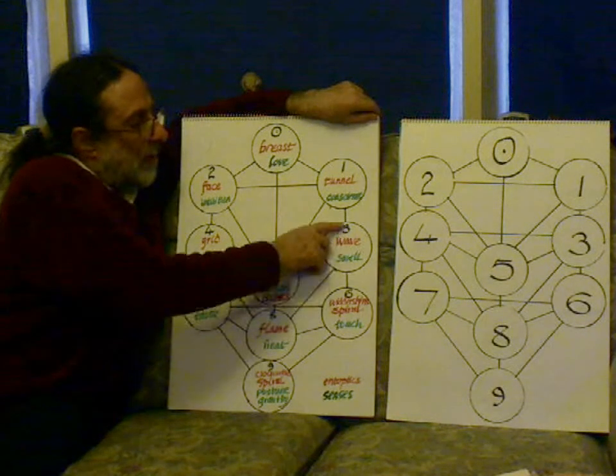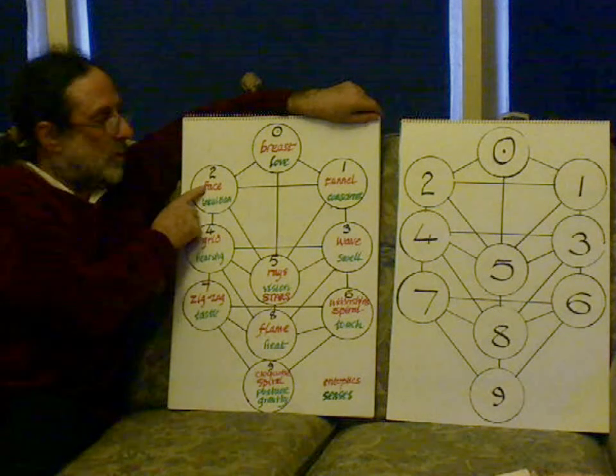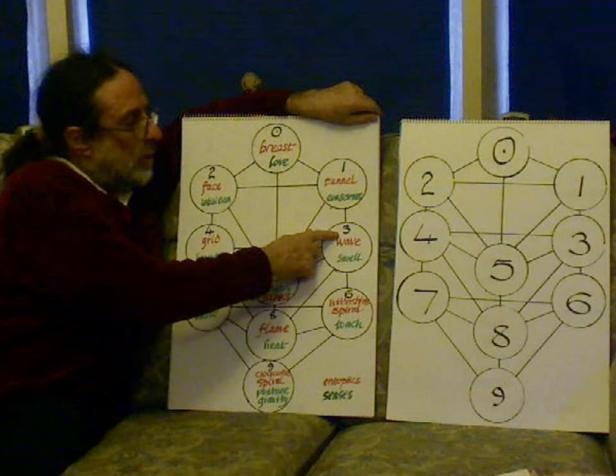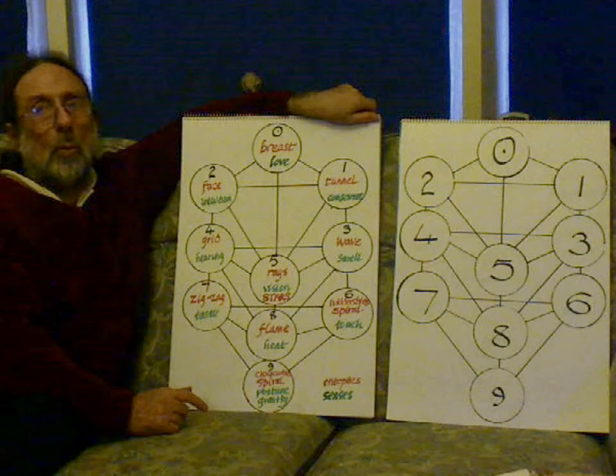And then we have the third dimension. The face is a surface, a plane, the second dimension. Onto the third dimension we have a wave, which is a ripple Entoptic or a wave Entoptic.